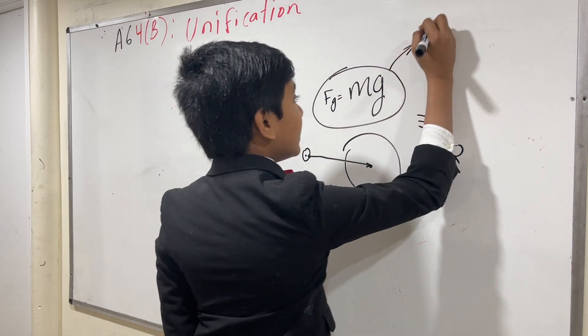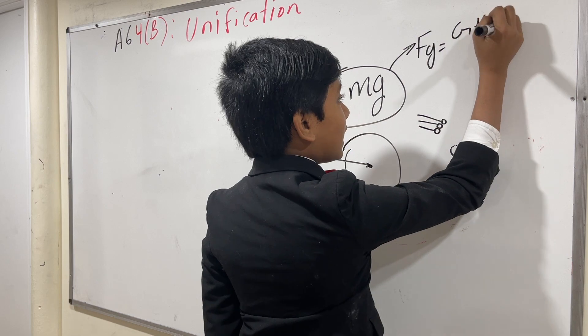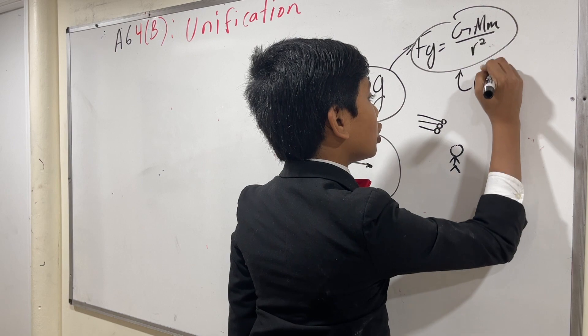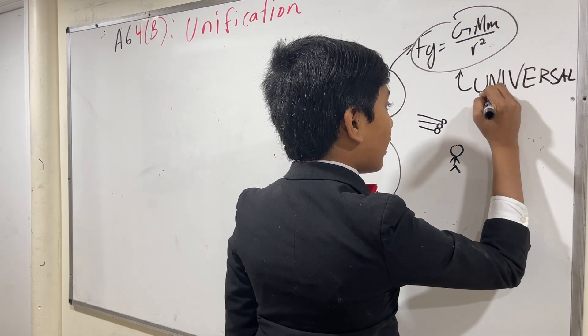But with this law, Fg equals G big M little m over r squared. And that's why this is called the universal law of gravitation.